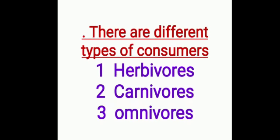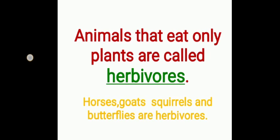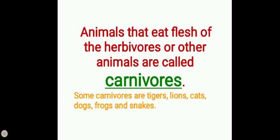Herbivores eat only plants — for example, horses and butterflies. Carnivores are flesh eaters — for example, frogs, dogs, lions, and cats. Omnivores eat both plants and animals.